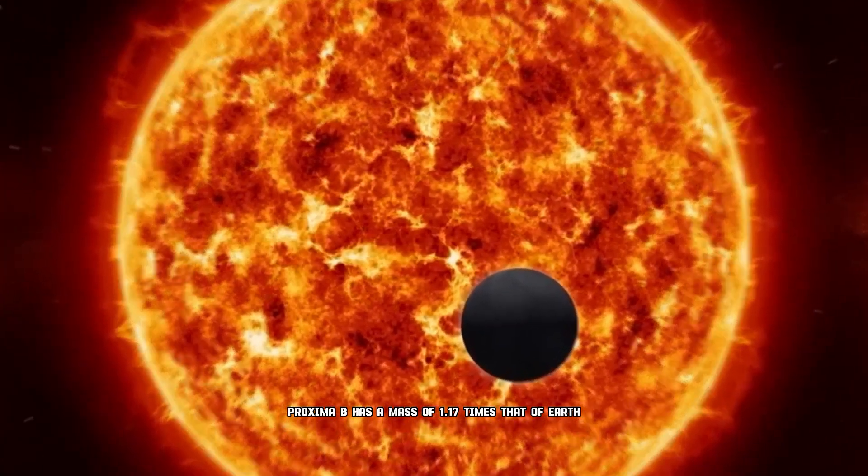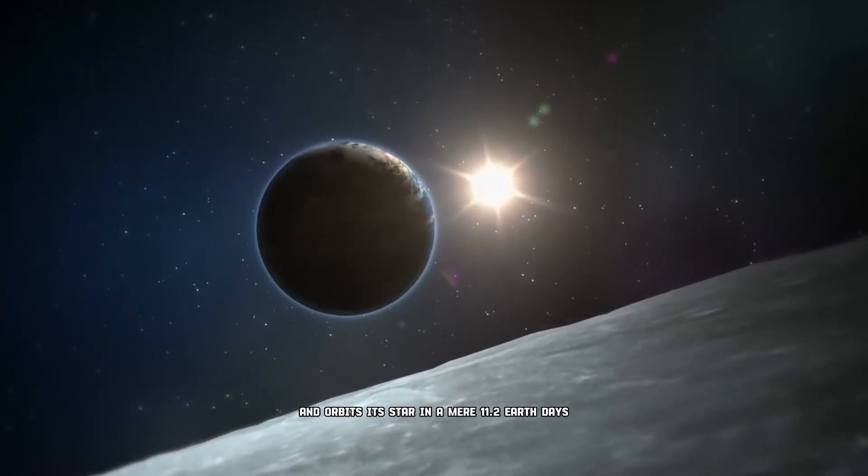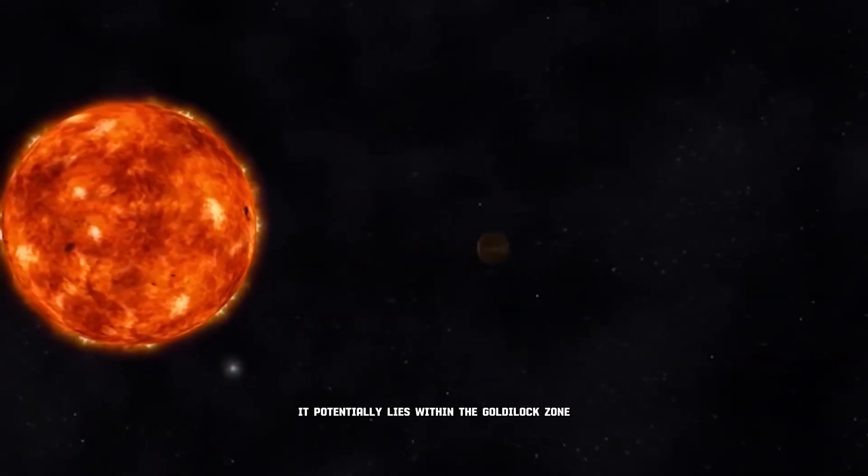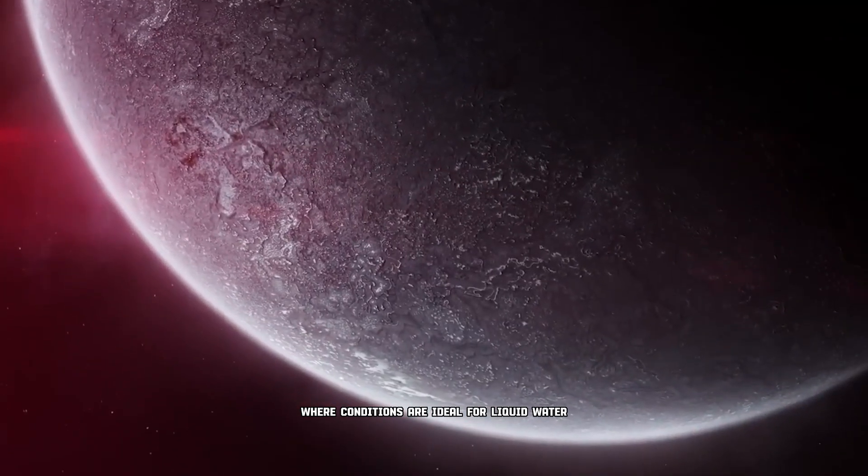Proxima B has a mass of 1.17 times that of Earth and orbits its star in a mere 11.2 Earth days. It potentially lies within the Goldilocks zone, where conditions are ideal for liquid water.